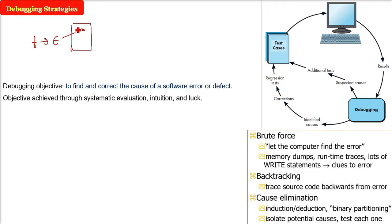So this objective, how do we achieve? Sometimes we systematically evaluate it. Sometimes experienced debuggers know where it is. Sometimes it is luck also. So in order to take all these into account, there are three debugging strategies which are adopted in order to achieve this objective. The first is brute force, then we have backtracking, and then cause elimination.